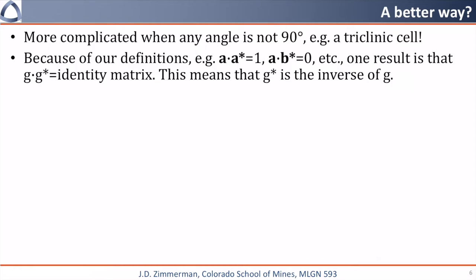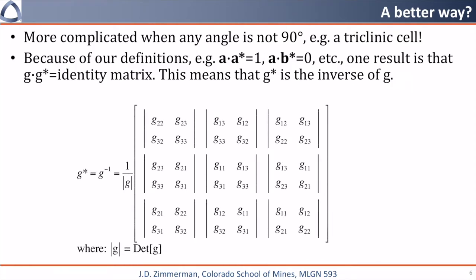This means that G star can be calculated by taking the inverse of G. If you need to calculate this, the way you'll do that is you'll take 1 divided by the determinant of G, and this will be multiplied by a matrix of all of the minor matrices of the 3 by 3 matrix.